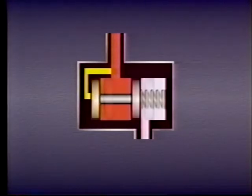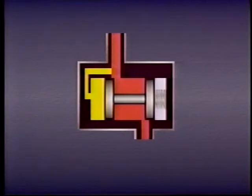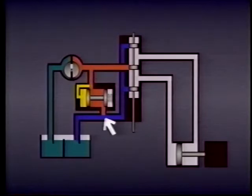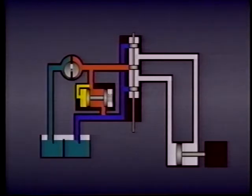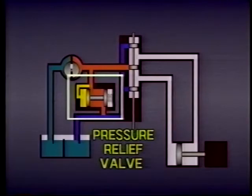The fluid pressure which actually moves the spool is known as pilot pressure. Pilot pressure is a common way of operating many types of hydraulic valves. A pressure control valve is often installed with its inlet port connected to the pressure side of a pump and its outlet port connected to the tank. This allows flow from the pump to return to tank so the system pressure doesn't become excessive. A normally non-passing pressure valve used like this is called a pressure relief valve.